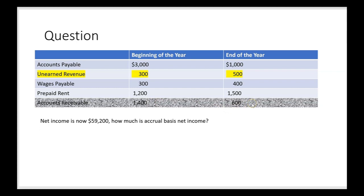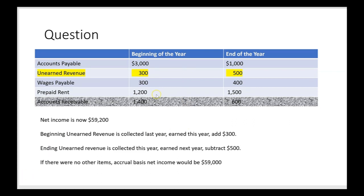We'll cross out accounts receivable since we've handled it. Now looking at unearned revenue: we can't memorize, we have to associate. Unearned revenue is cash collected in advance. The beginning balance of $300 was collected last year and earned this year, so we add $300, bringing us to $59,500. Ending unearned revenue of $500 was collected this year but won't be earned until next year, so we subtract $500. That brings us to $59,000 if there were no other items. We'll carry that $59,000 forward to the next slide.